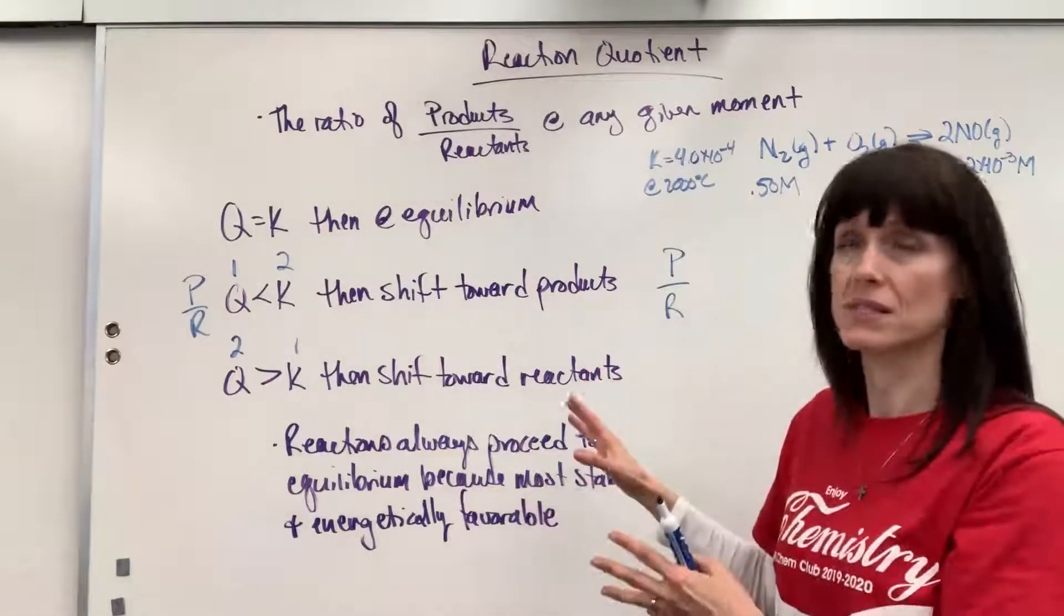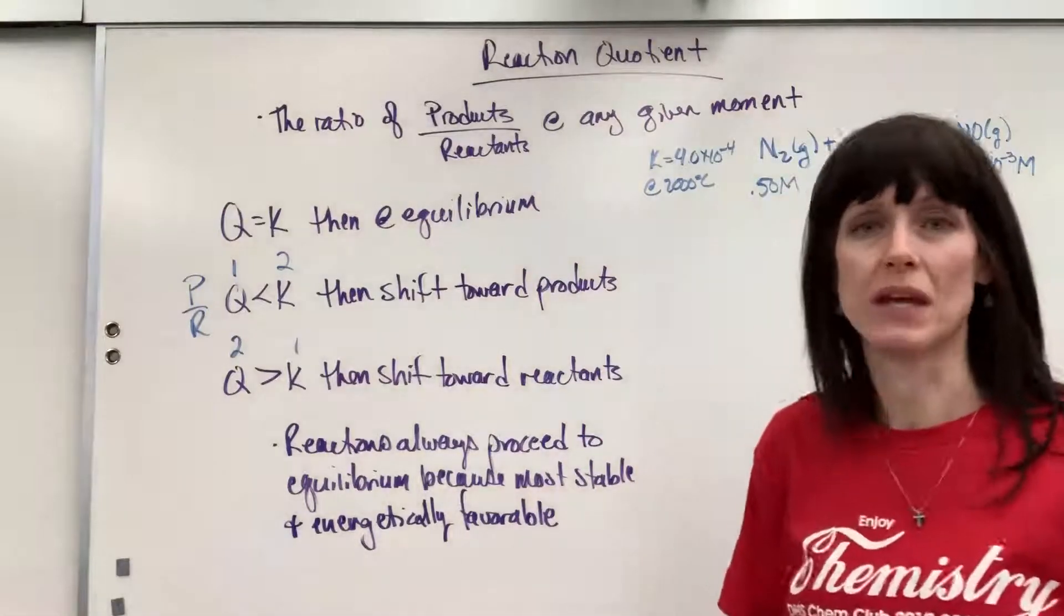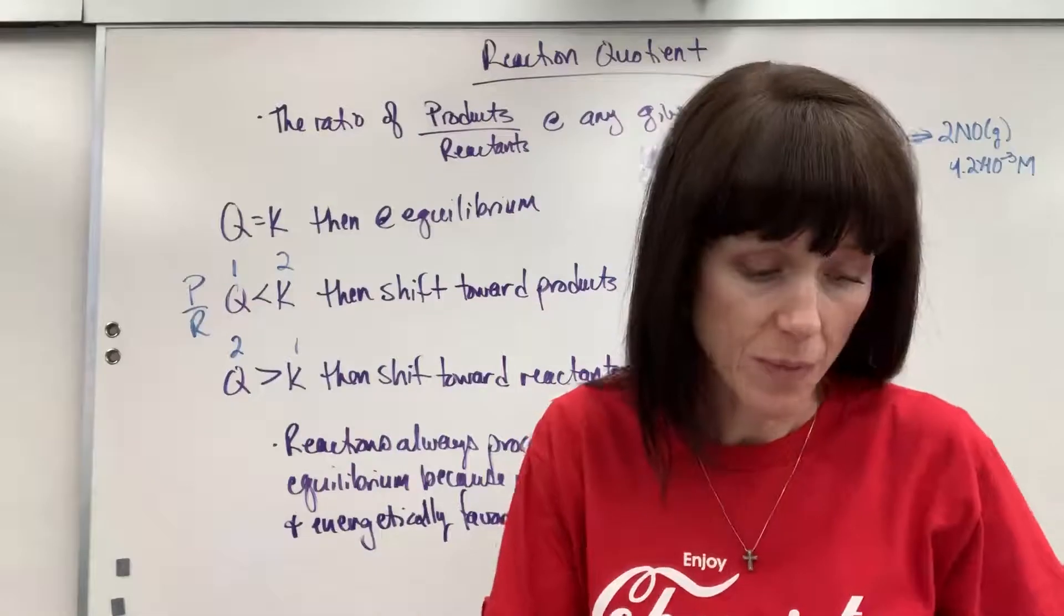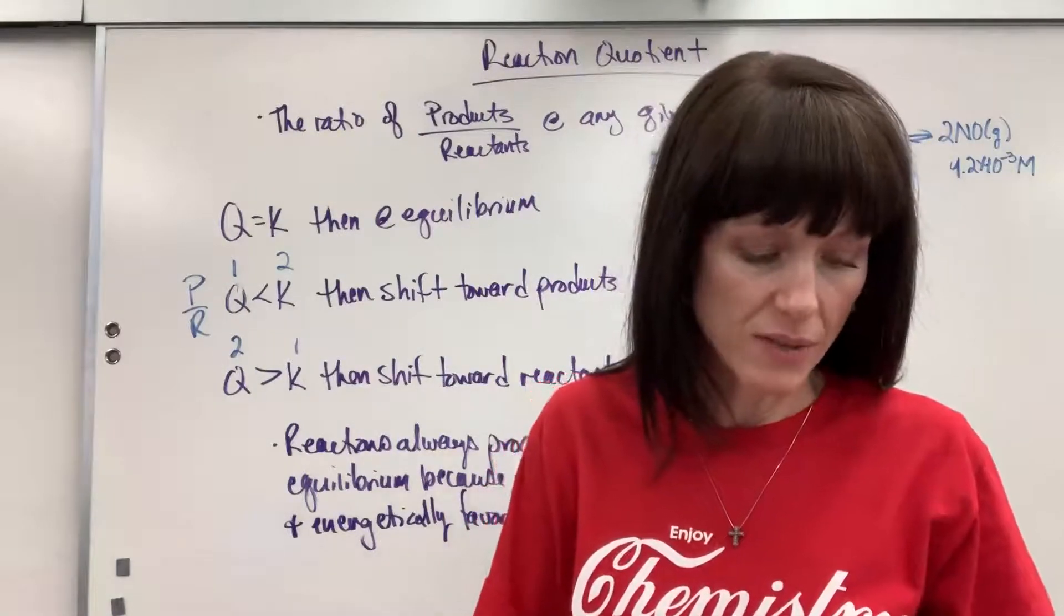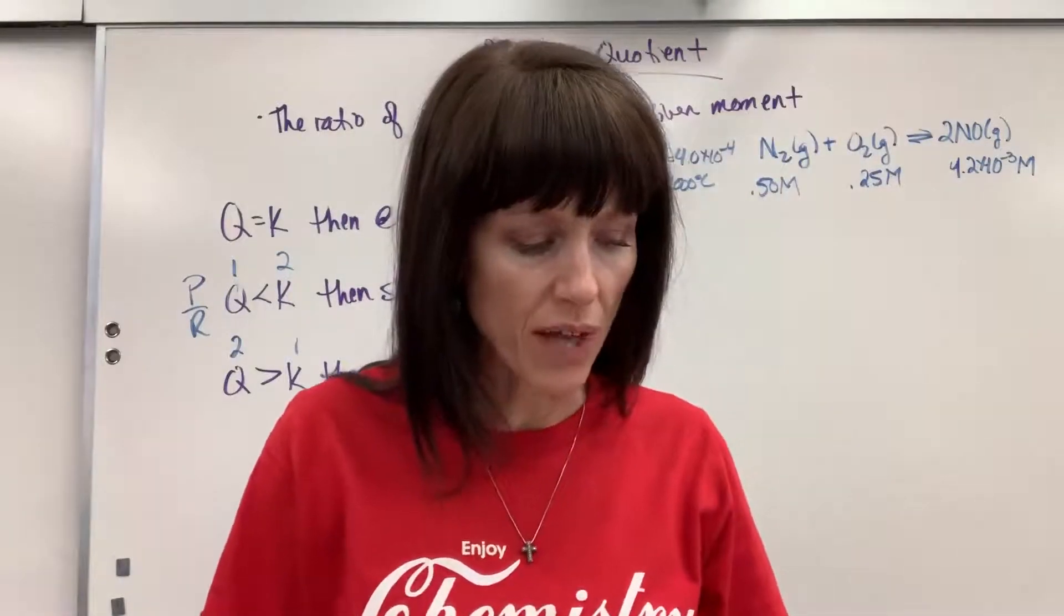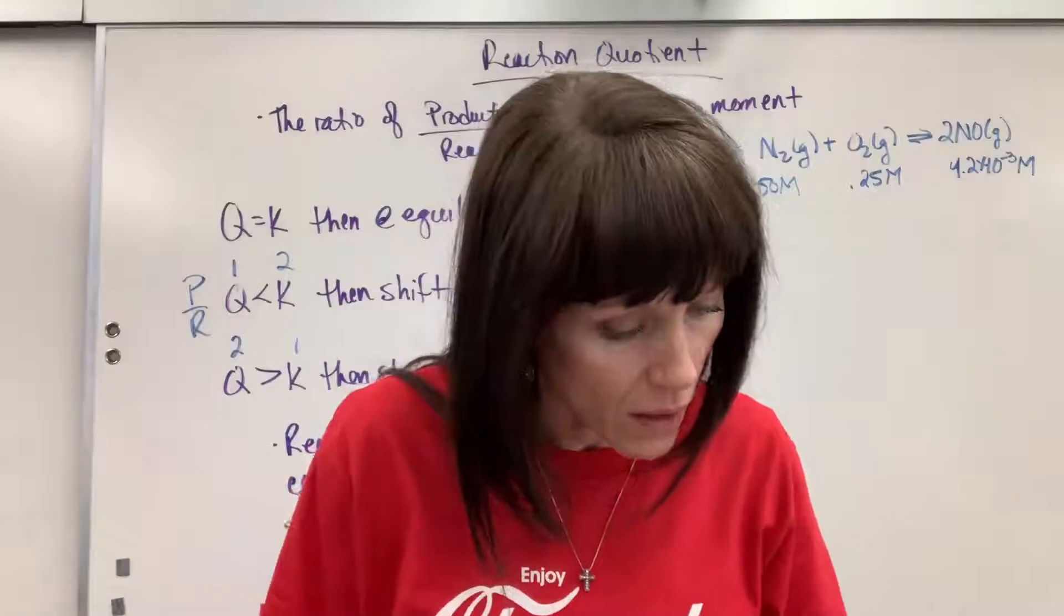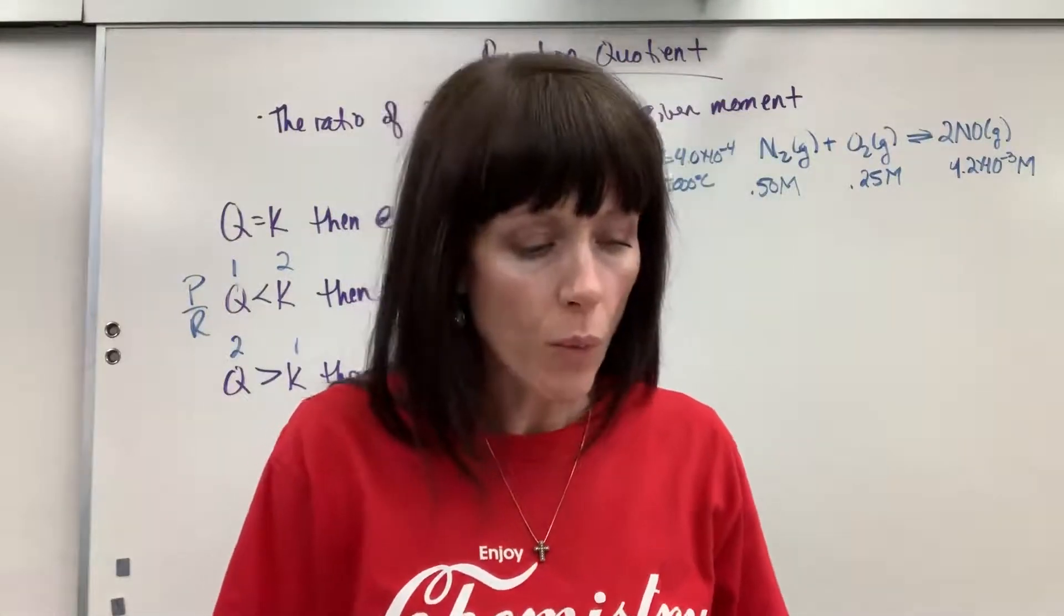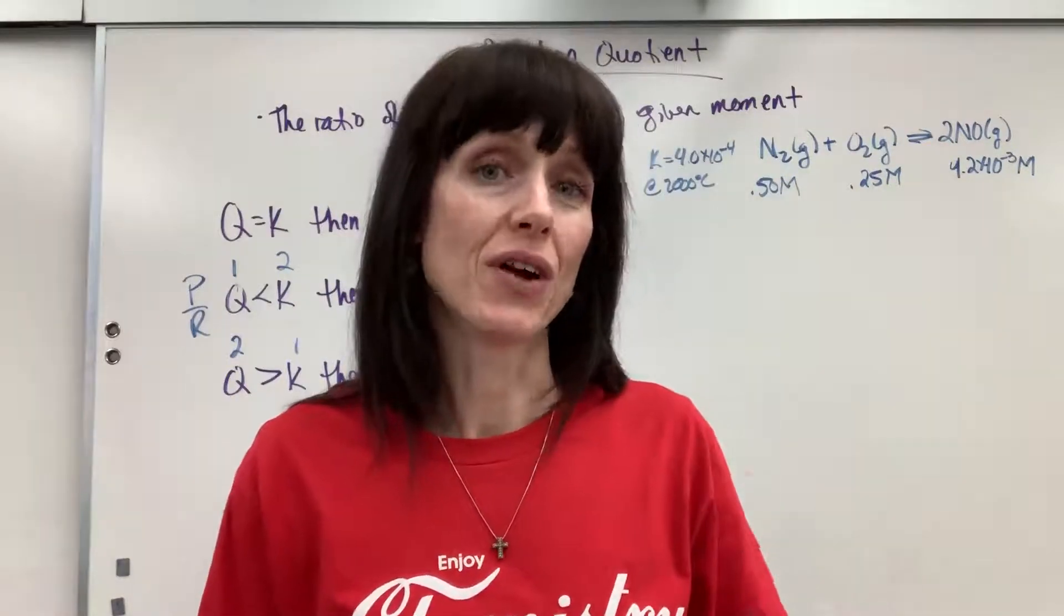So there's the theory. There's the basis of reaction quotient. Now let's talk about some problems that you could be given. In the problem, you'll know that you're not at equilibrium. In fact, on this problem, here's how it is worded. It says you have a flask in which at 2000 Kelvin, the concentration of the nitrogen is 0.5, oxygen 0.25, NO 4.2 times 10 to the minus 3. Is the system in equilibrium? And so at that point, you know, I've got to do Q. They're not telling me that I'm in equilibrium. One way or another, inside of the problem, you'll know that you're not at equilibrium and you need to figure out which way it will shift.